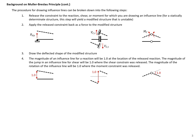The procedure for drawing influence lines involves the following steps. First, release the constraint — the reaction, shear, or moment — for which you are drawing an influence line. For statically determinate structures, this will yield an unstable structure. Next, apply the released constraint back to the structure as a force. For a reaction, release the vertical restraint and add a vertical force. For shear, add a sticky roller — release the shear restraint and add back the shear force.